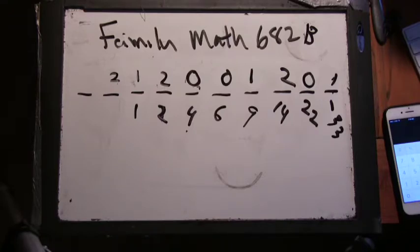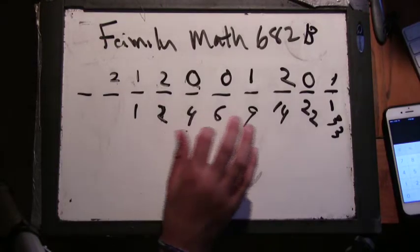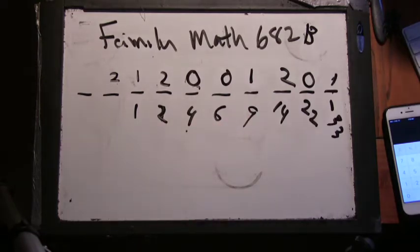Read it out for me. Two times three halves to the eighth. Plus one times three halves to the seventh. Plus two times three halves to the sixth. Plus, skip five, skip four. One times three halves cubed. Plus two times three halves squared. Skip one plus one.